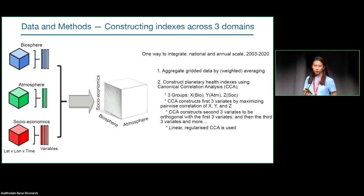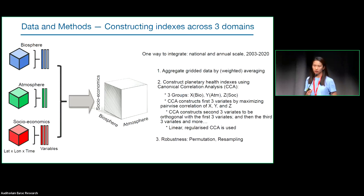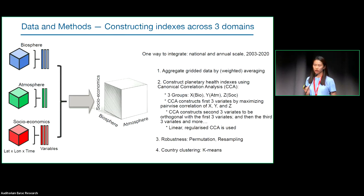CCA also provides additional variates constructed orthogonally, with third, fourth, and fifth pairs depending on the minimum number of variables in the original cube. We use a linear-assumption-based CCA method that can reduce overfitting by regularization. After CCA analysis, permutation and other statistical methods illustrate the significance and robustness of the constructed variates. The final step is to identify generic trajectories of country-level biosphere, atmosphere, and socioeconomic interactions using clustering methods such as k-means.